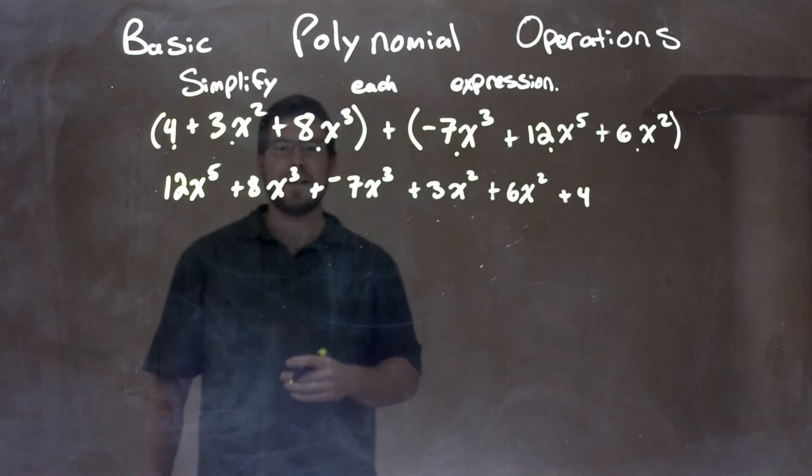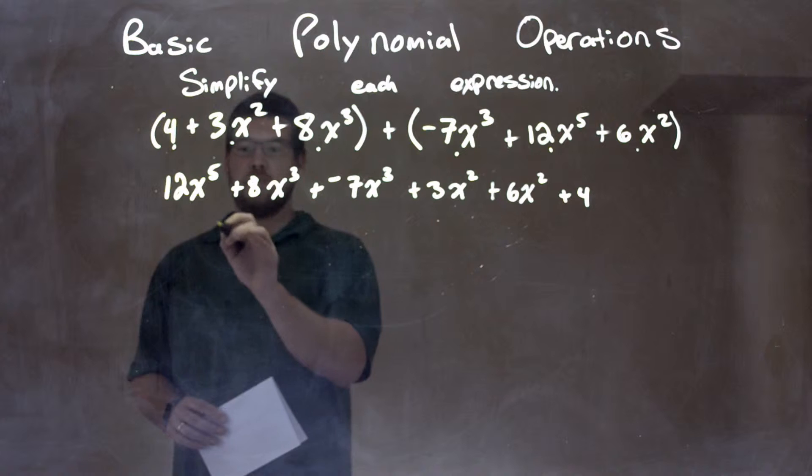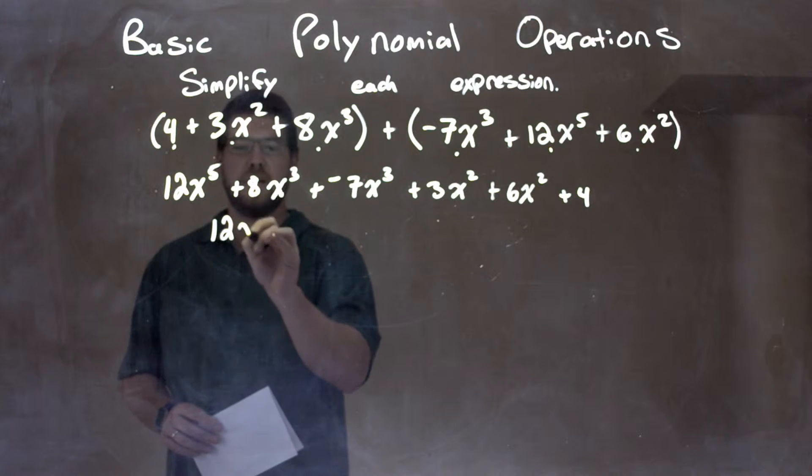We're good to go. So now I need to combine my like terms. There's nothing else to the fifth power, so that just comes down, 12x to the fifth.